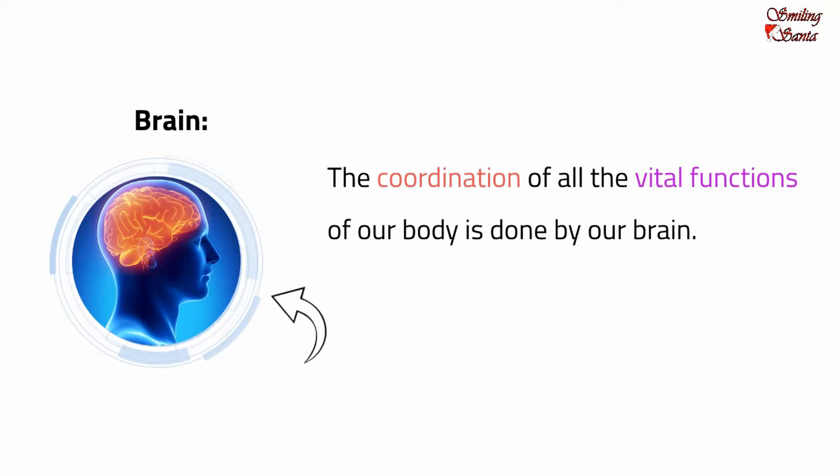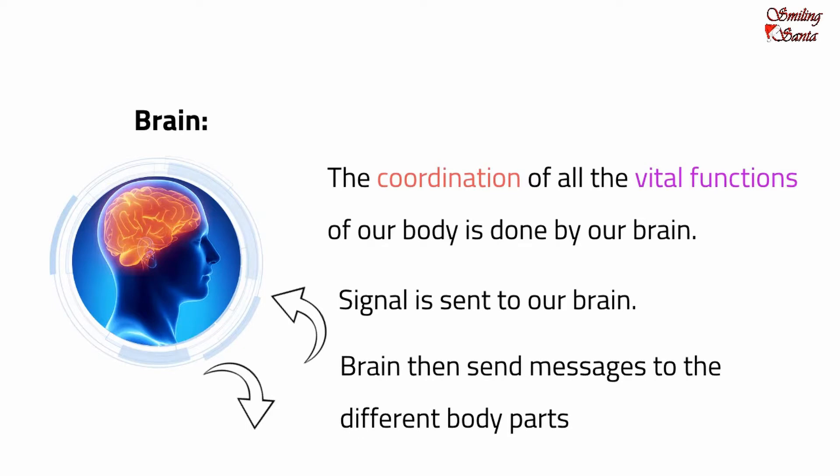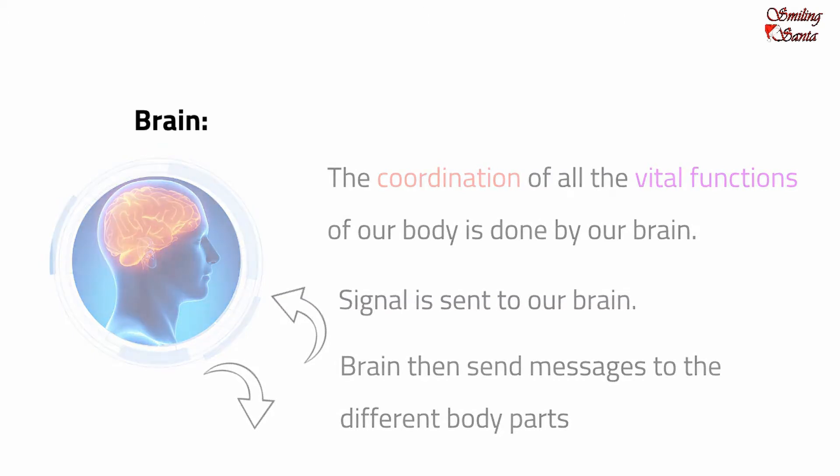Nerve cells in the body receive the signal from the outside world and then the signal is sent to our brain. Our brain then sends messages to different body parts like legs, arms, etc. so that they respond in the right way to the environment.